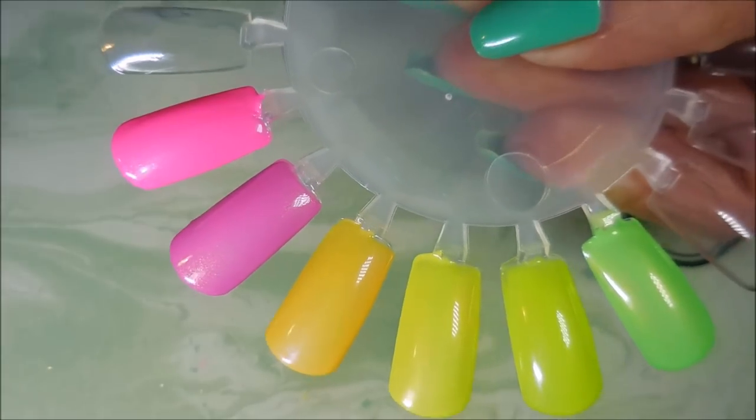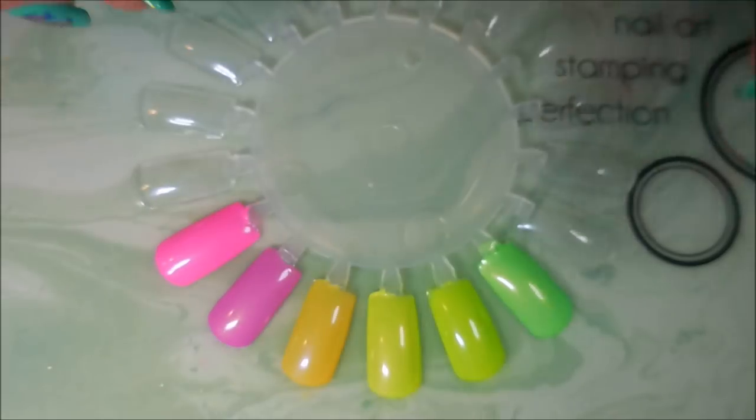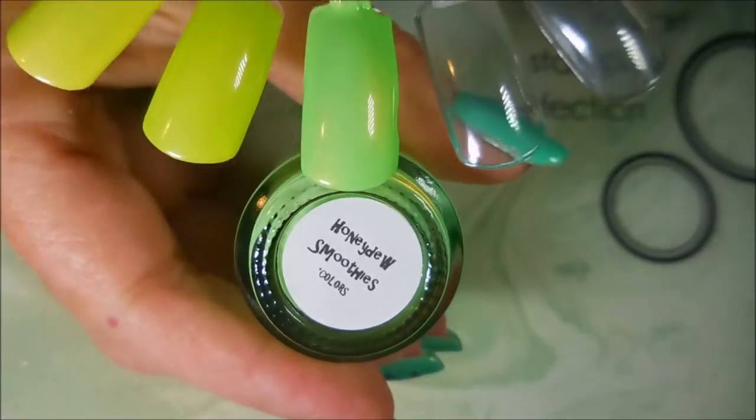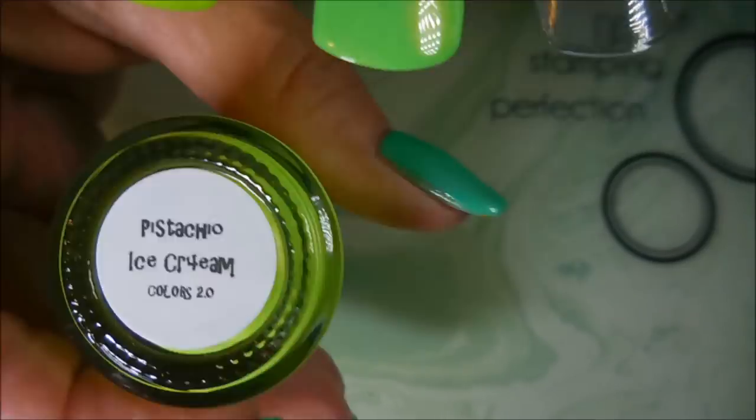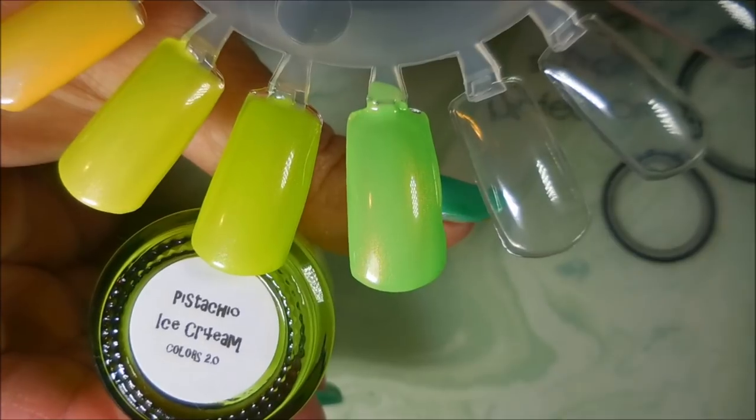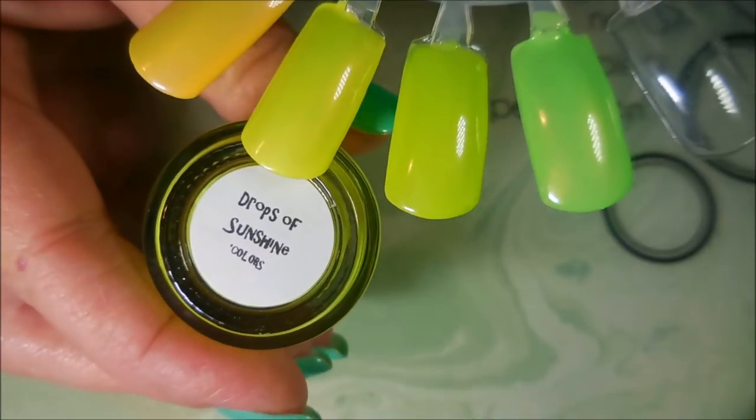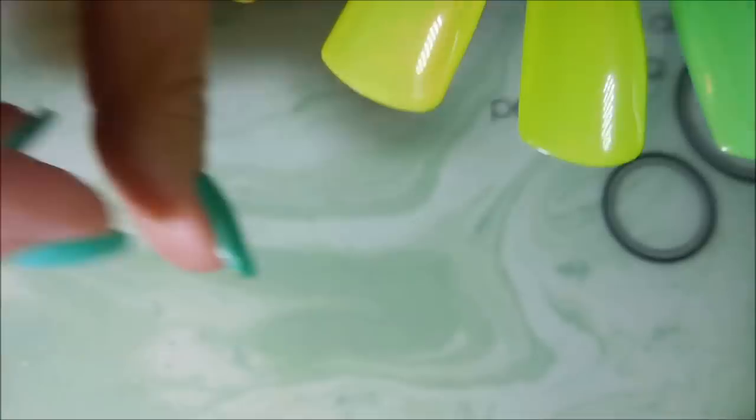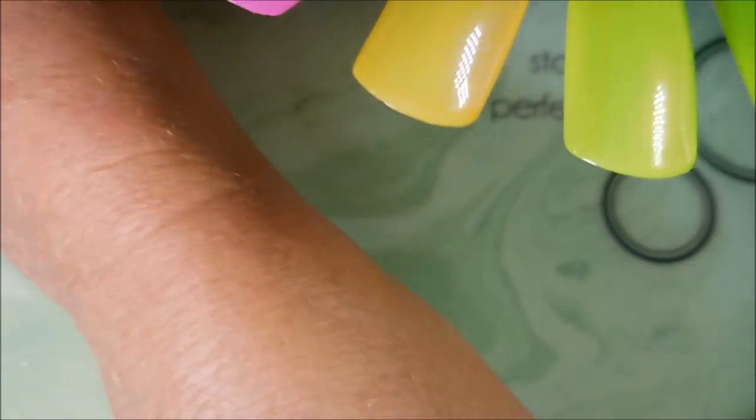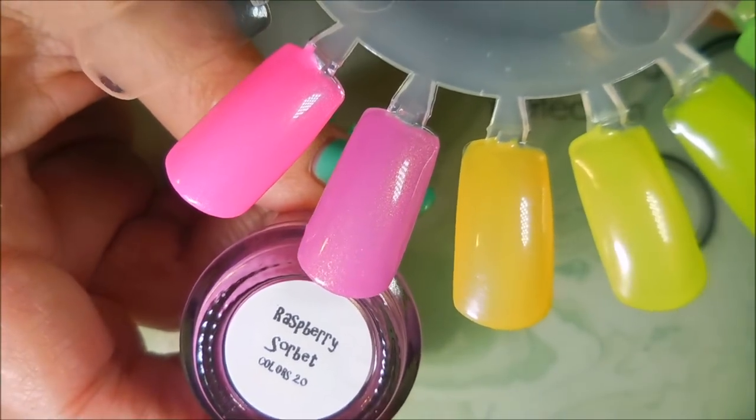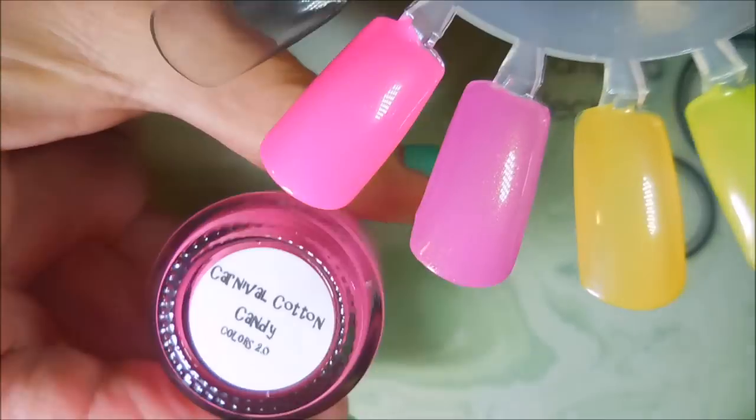So, here we go with the rundown. This is Honeydew Smoothies. Pistachio Ice Cream. Drops of Sunshine. Orange Dreamsicle. And Raspberry Sorbet. And then Carnival Cotton Candy.